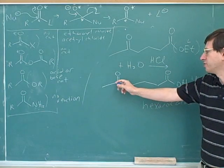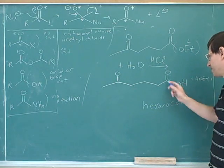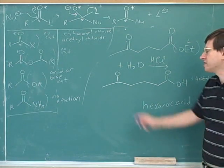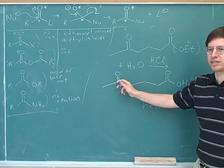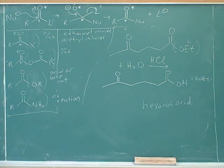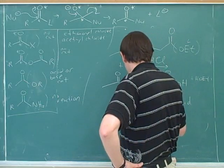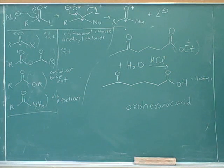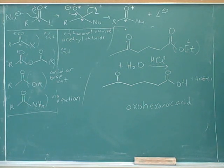Now, if the ketone was the principal functional group, the suffix would be -one. But since the carboxylic acid is the principal group, the suffix is -oic acid. Since the ketone is not the principal functional group, it has to be named as a prefix. The prefix we use for aldehydes and ketones is oxo — and that's for both aldehydes and ketones. They have different suffixes, but they both have the same prefix, which is oxo.